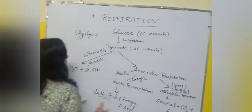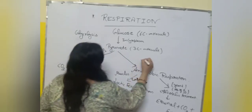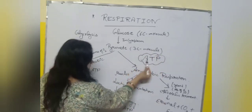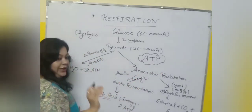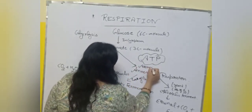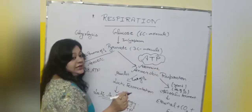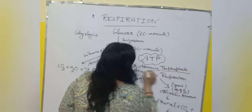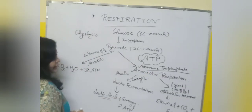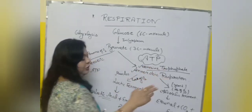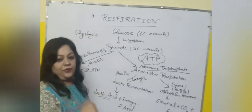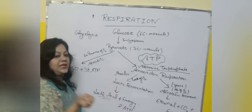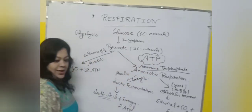ATP — adenosine triphosphate — molecules are known as the energy currency of our cell. Whenever we are lacking in energy, these ATP molecules break down to release energy. These are the energy currency of our cell.